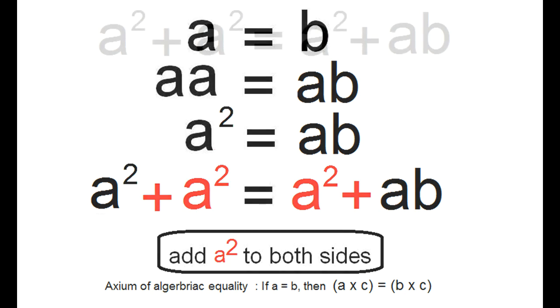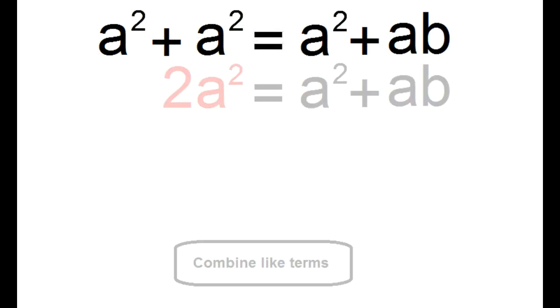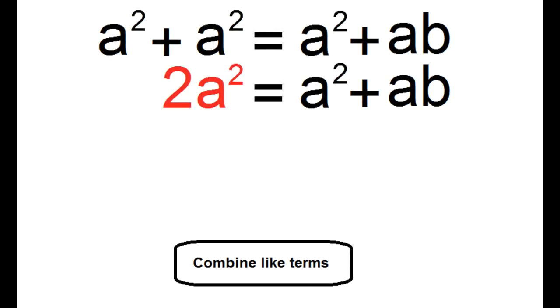Add A squared to both sides. Simplify by combining like terms. A squared plus A squared is 2A squared.